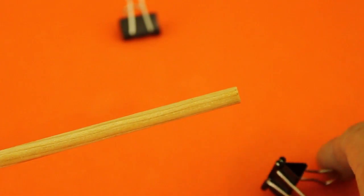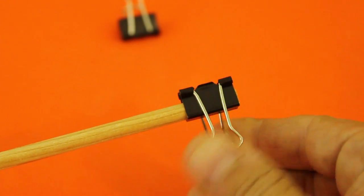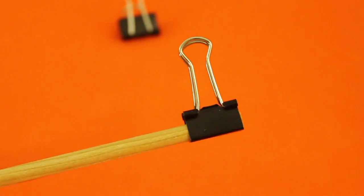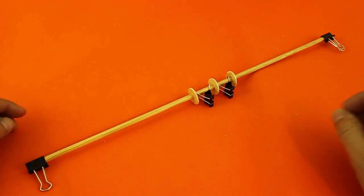Finally, put the remaining two clips at the ends of the dowel and put them in this position. Okay, our walking mechanism is finished.